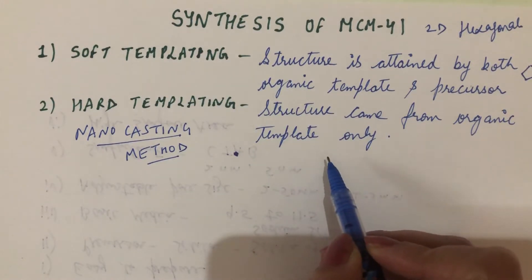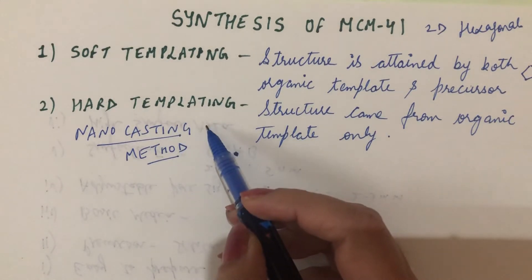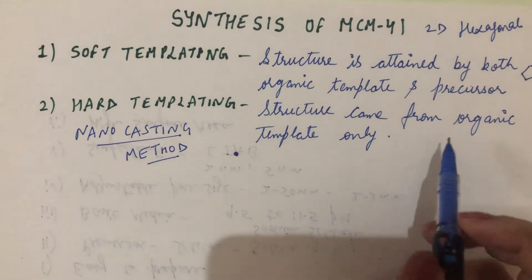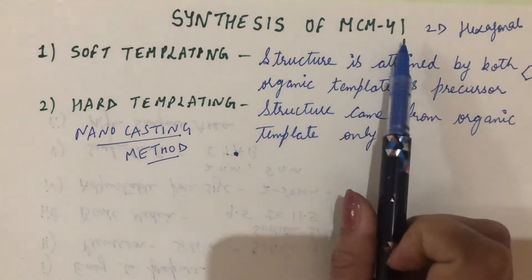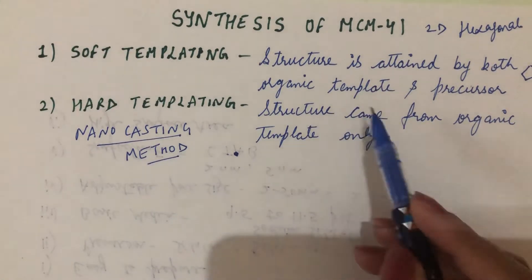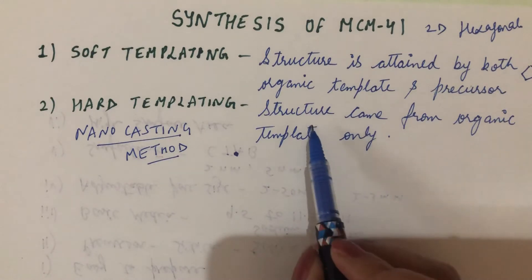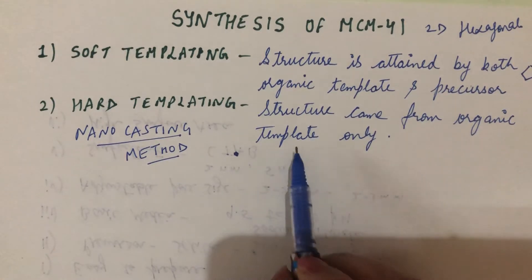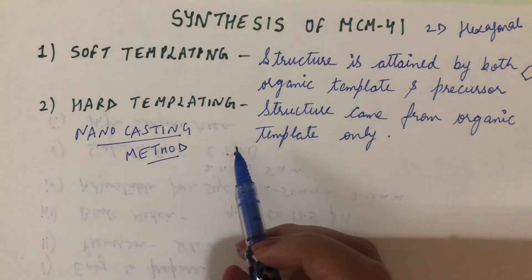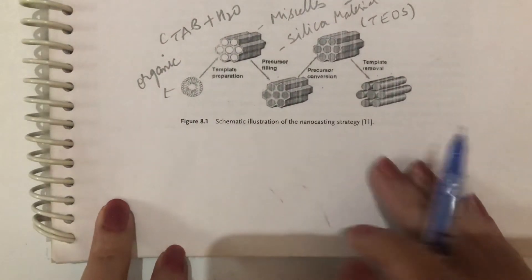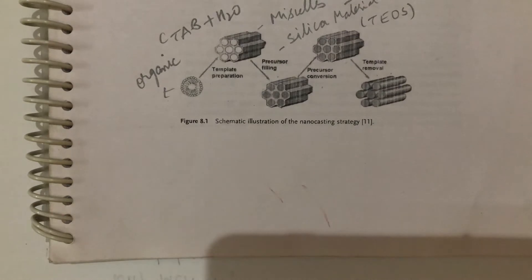If the structure is decided only by the organic template, it is called hard templating. Most researchers who work on MCM-41 follow the nanocasting method, where the structure is obtained by the organic template only. I will discuss this using a diagram from one of the books.